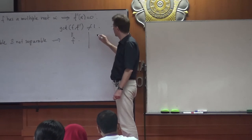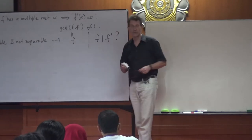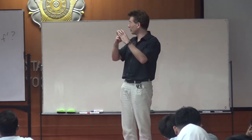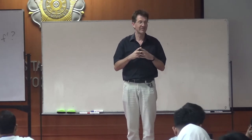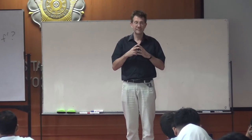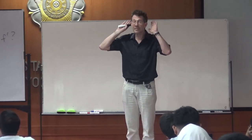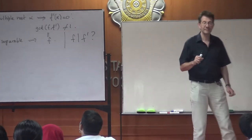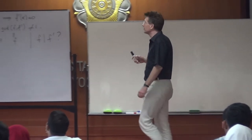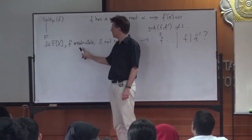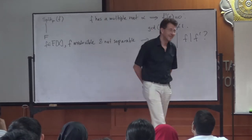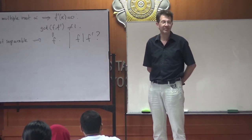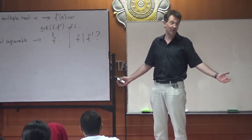Can the GCD of F and F prime be equal to F? Of course, you think that cannot happen because the derivative has a lower degree than F, so it cannot be F. Or can it? Can you think of a polynomial for which F divides the derivative? It's almost proved that irreducible polynomials are automatically separable — or is there still a slight catch? A constant polynomial has derivative zero, but constant polynomials are not irreducible.